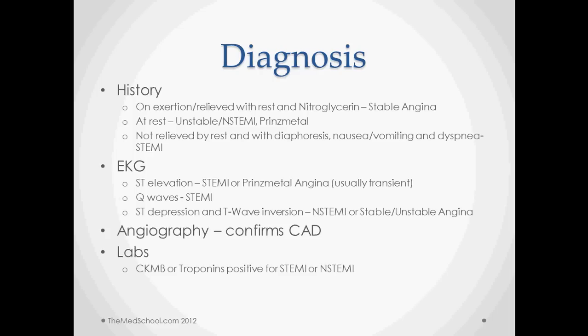In diagnosis, history is very important. If you have angina on exertion relieved with rest and nitroglycerin, we're probably talking about stable angina. If you're having angina at rest, it's probably a more unstable condition, or it could be an NSTEMI — and possibly Prinzmetal's. If it's not relieved by rest and is accompanied by diaphoresis, nausea, vomiting, and dyspnea, then we're usually thinking of an ST elevation MI.